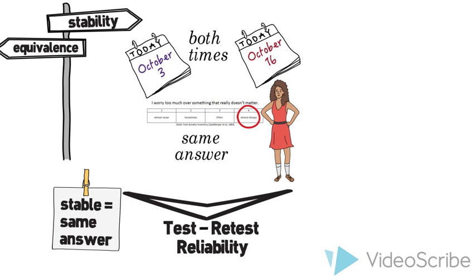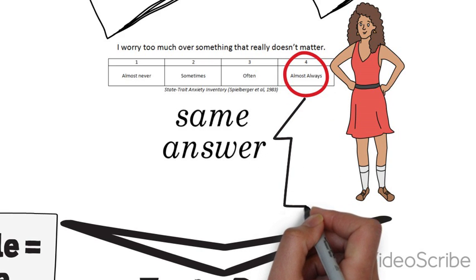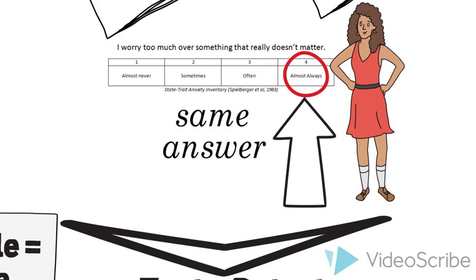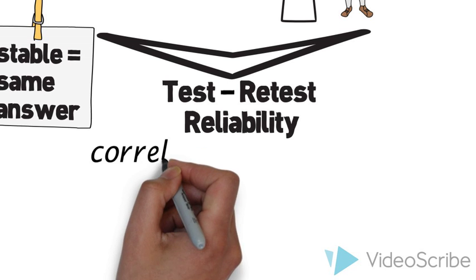In other words, someone who says they almost always worry too much when asked the first time should have the same answer the second time if the question is stable. So how do you measure test-retest reliability?